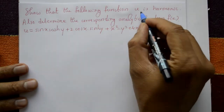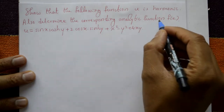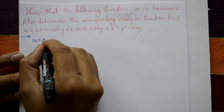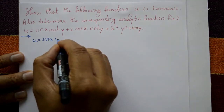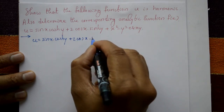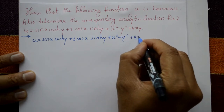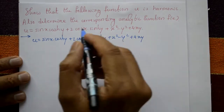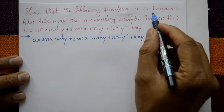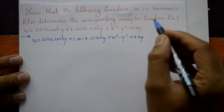Show that the following function u is harmonic, and also determine the corresponding analytic function f(z). The solution u is equal to sin(x)·cosh(y) plus 2cos(x)·sinh(y) plus x² minus y² plus 4xy. The real part is given. First, to prove that u is harmonic means it satisfies Laplace's equation, then after that find f(z) as an analytic function.